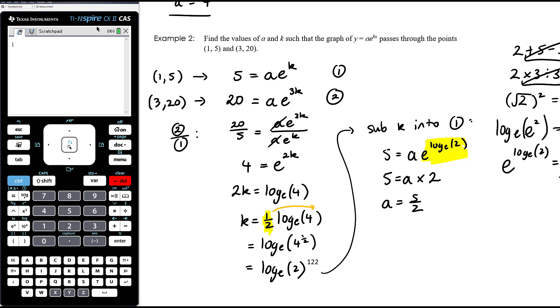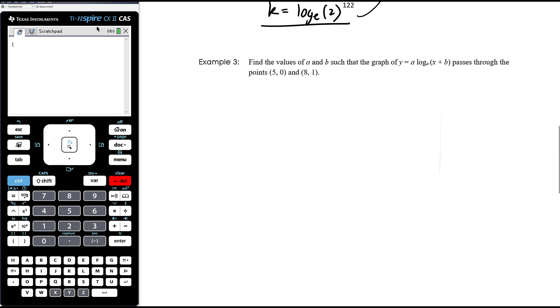Now the question says find the values of a and k. So k equals that and a equals that. Alright, example 3, I think that's the final one.